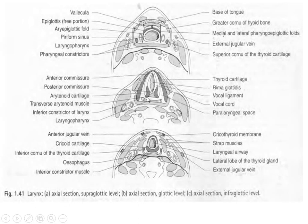At the level of the epiglottis, we see a continuous cartilage ring from the thyroid cartilage anteriorly and the arytenoid cartilage posteriorly, with the rim of the glottis in the middle, and the constrictor muscle of the pharynx. At the infraglottic level, we see the laryngeal airway in the middle, the inferior constrictor muscle of the pharynx behind it, and the thyroid gland lateral to it.